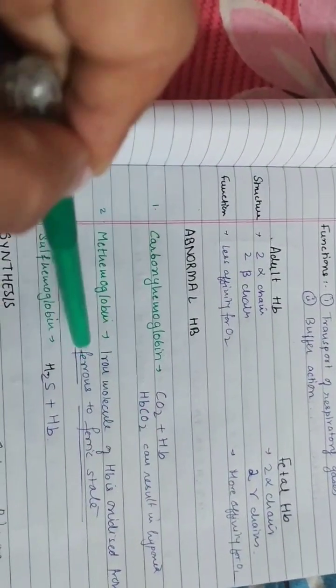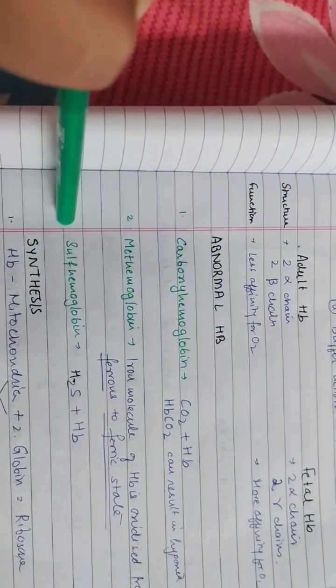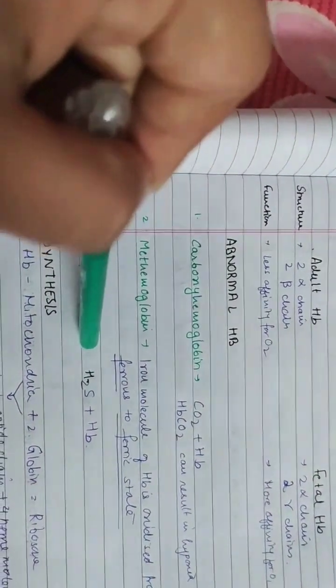In methemoglobin, the iron is oxidized from ferrous to ferric state. In sulfemoglobin, it combines with hydrogen sulfide.